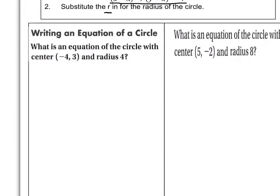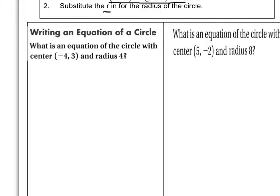So as we look at the first example here, what is an equation of the circle with center of negative 4, 3 and a radius of 4? So I'm going to put down the standard form of a circle.